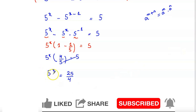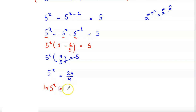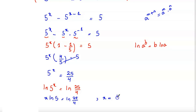we need to apply the natural logarithm to both sides of the equation. So ln of 5 to the power x equals ln of 25 over 4. We know that ln of a to the power b equals b times ln a, so x times ln 5 equals ln of 25 over 4, therefore x equals ln(25/4) divided by ln(5).